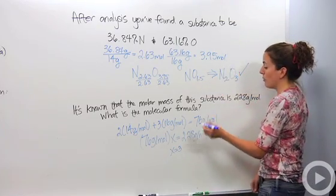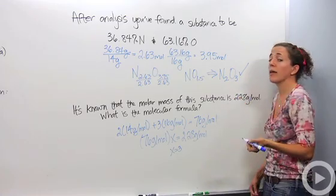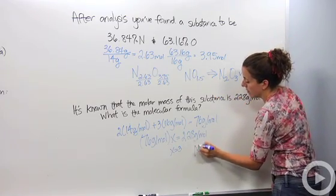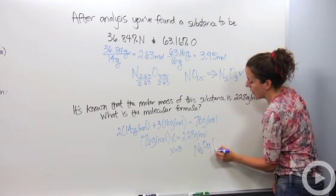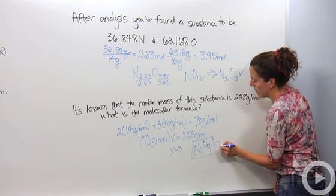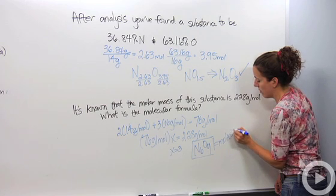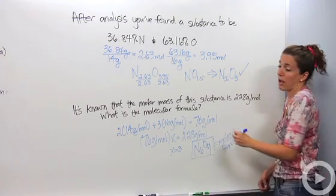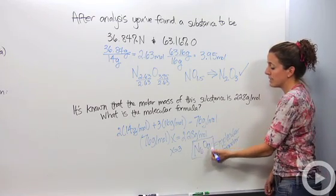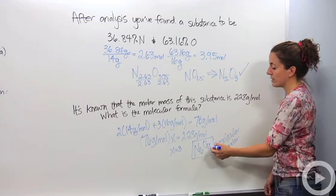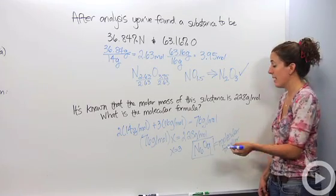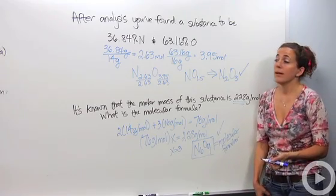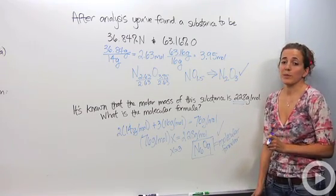So basically I'm going to have to multiply N 2 O 3, these subscripts, by 3 to get the molecular formula. So I'm going to say N 6 O 9. That is my molecular formula. And if I were to check it and figure out the molar mass of this, which I'm not going to do right now, but if I were to check the molar mass of this and multiply everything 6 times 14 plus 9 times 16, which is the molar mass, I will get 228 grams, which will make sure I check it and this is correct. So that is basically the difference between empirical and molecular formulas and being able to calculate them from their percent composition.